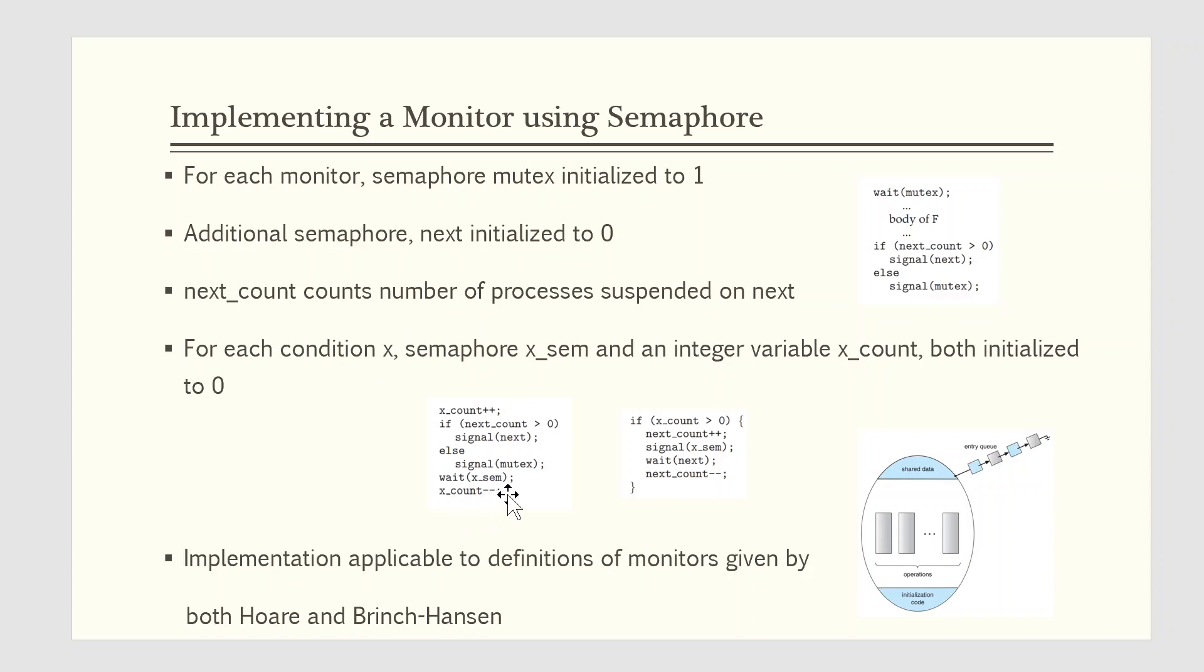The operation x.signal can be implemented as given here. x_count is checked if it's greater than 0 then next_count is incremented by 1. Then signal operation is done on x_sem, and wait operation is done on next and next_count is decremented by 1. This implementation is applicable to the definitions of monitors given by both Hoare and Brinch Hansen.